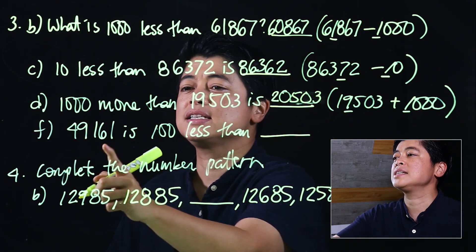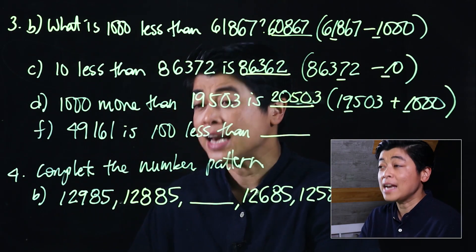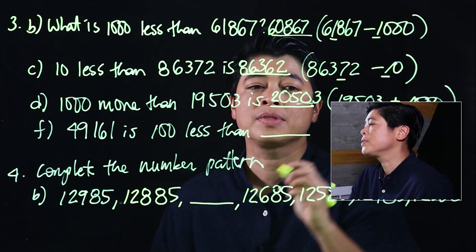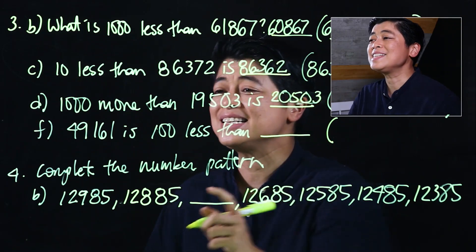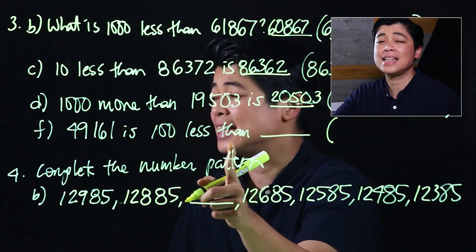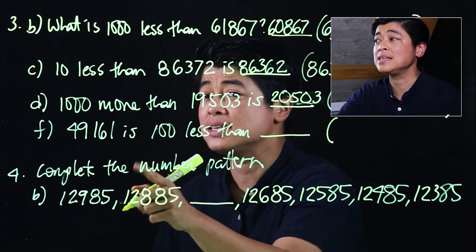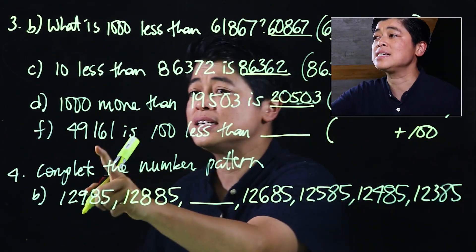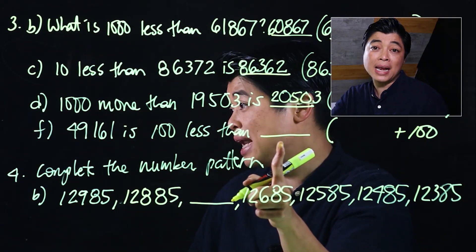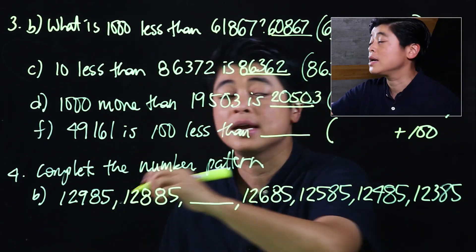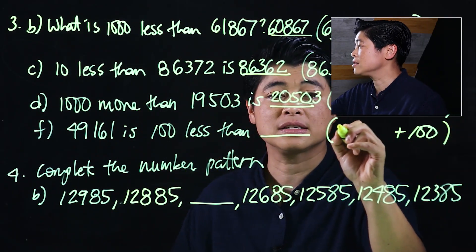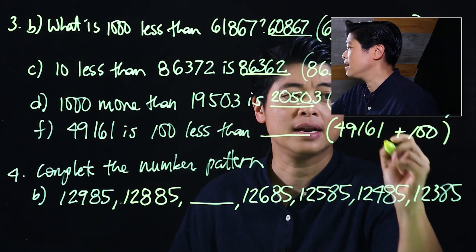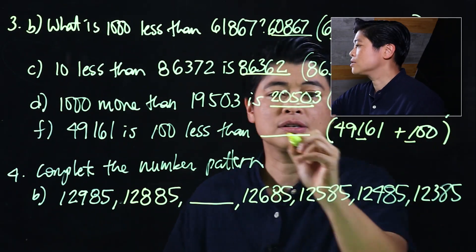Then it says 49,161 is 100 less than blank. In this case, although it says less than, we're not going to subtract—we're actually adding. Because it says this number is less than the number that's blank, so we have to add back. That's 49,161 add 100, so that's 49,261.